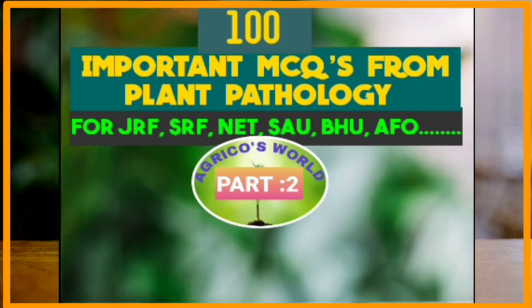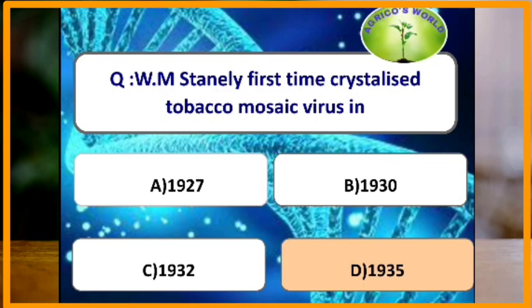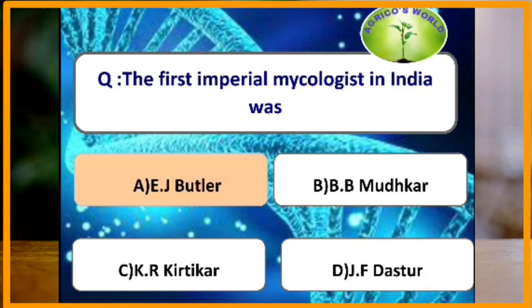WM Stanley first crystallized tobacco mosaic virus in which year? The tobacco mosaic virus was crystallized by Stanley in the year 1935. The first Imperial Mycologist in India was?